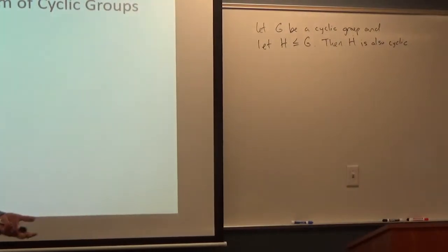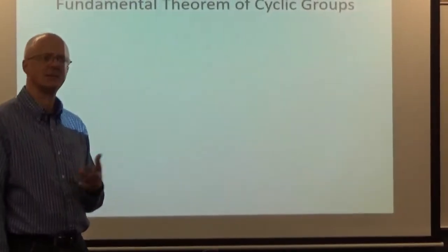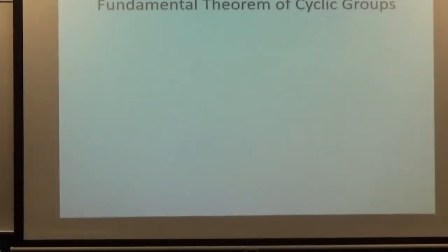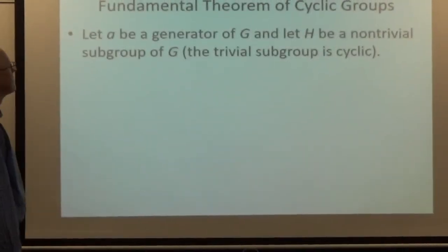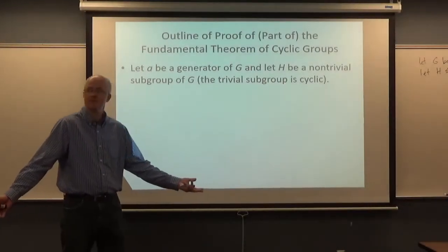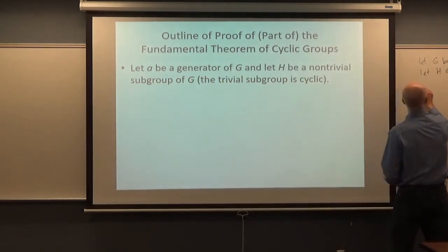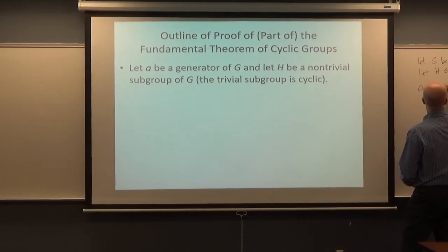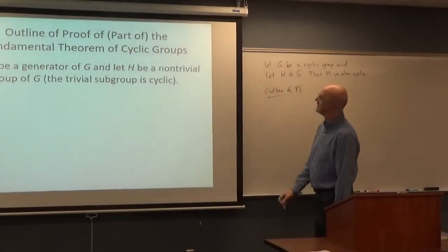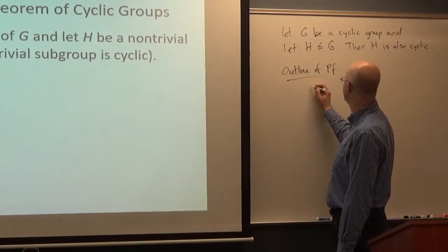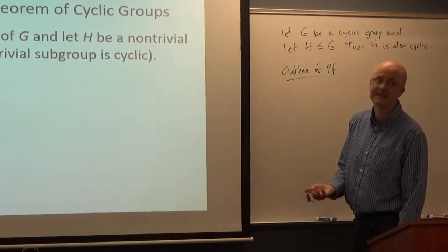It's not too hard once you have the outline. Thinking about the exam, I could ask about this—probably I would give you help, because doing it completely cold from scratch would be too much, though each individual step is not terribly difficult. First, G is cyclic, so it has a generator. Let A be a generator of G, and let H be a non-trivial subgroup.